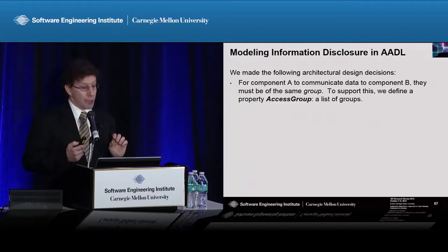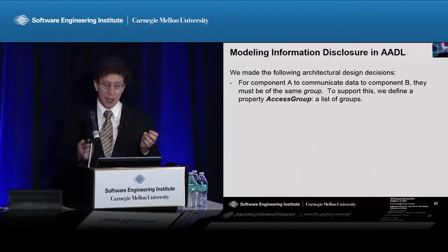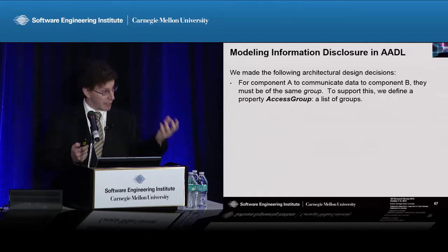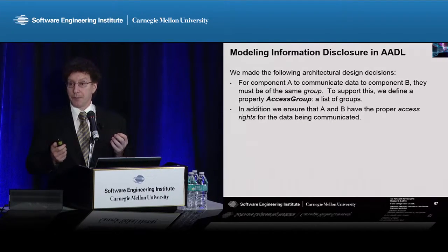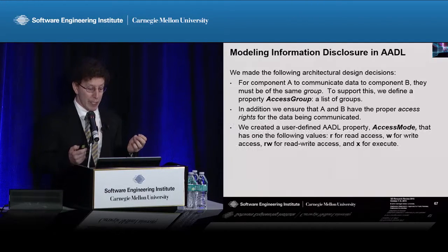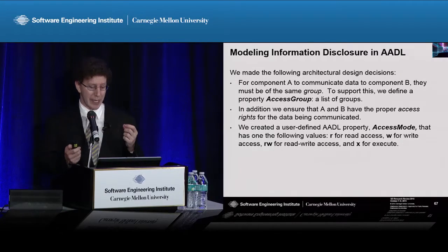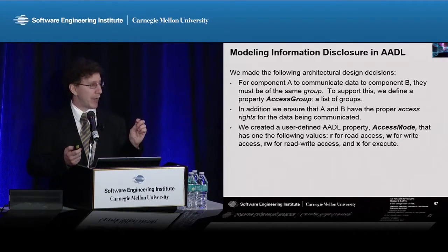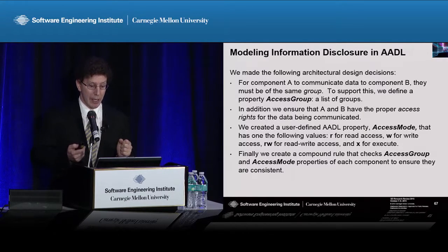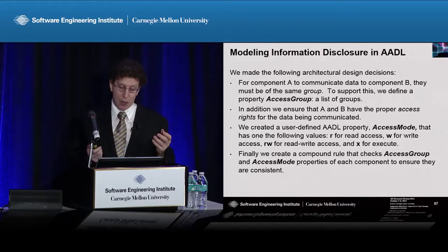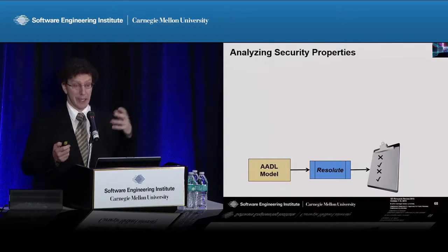If component A wants to communicate some data to component B, they have to be of the same group. To support this, we defined a property — we extended AADL with a property called access group, a list of groups. Also, you have to ensure that components have the proper access rights for the data being communicated. Following Unix-style access rights, we defined another property, access mode, with possible values of read, write, execute, or combinations of those. Then we created a compound rule that checks the access group and the access mode properties of every component to ensure that they're consistent for the data they're trying to share.